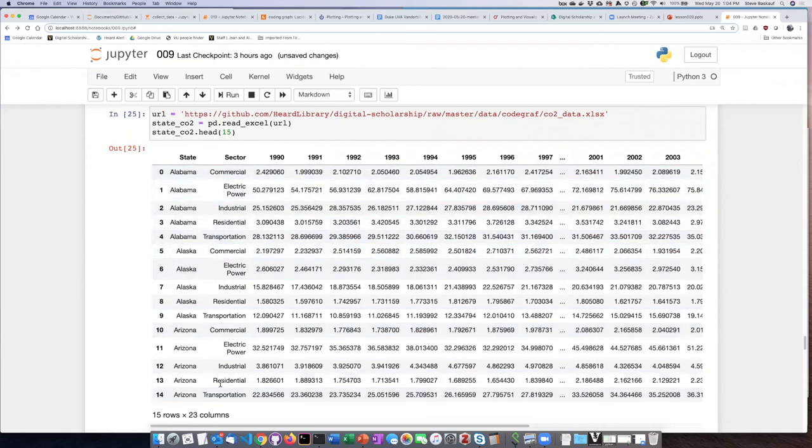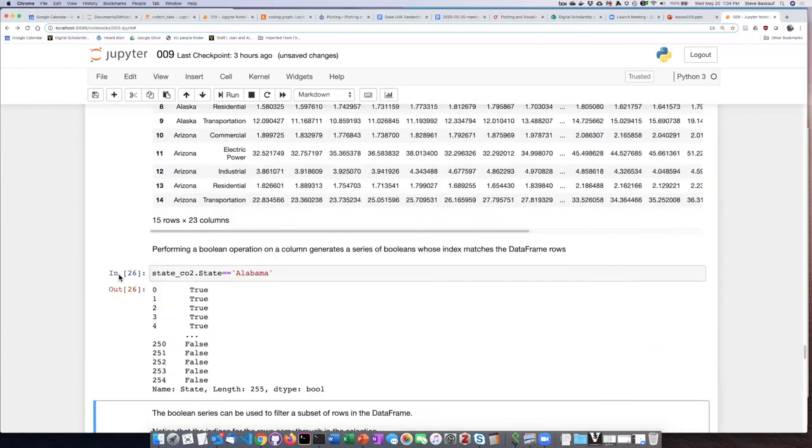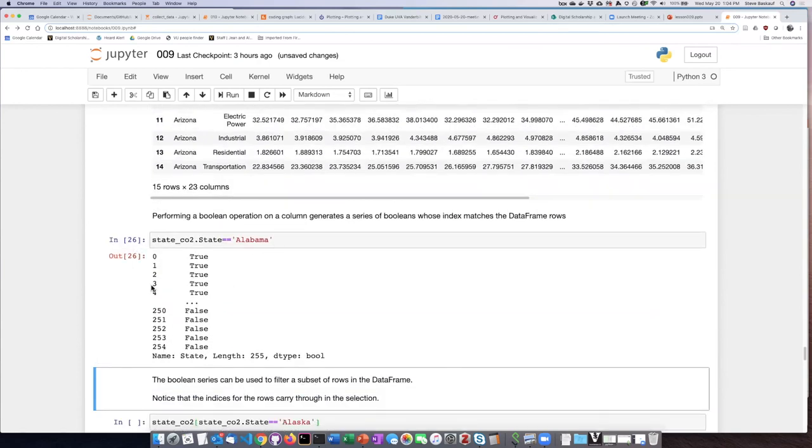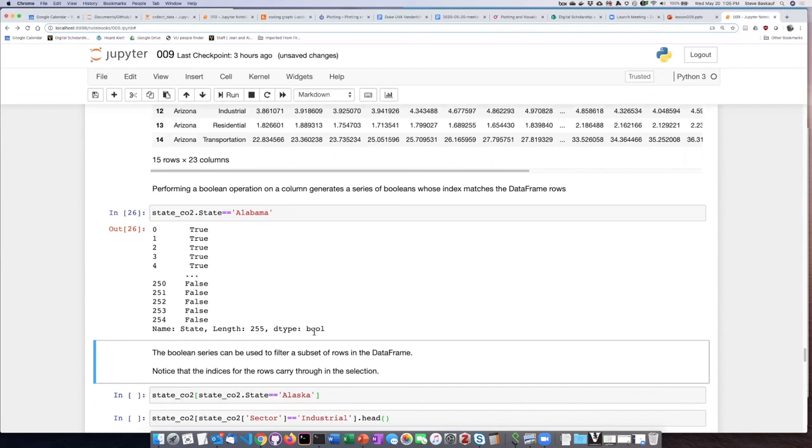So this is the series that we have built based on this condition. It's got 255 values in it, and they're all Booleans.